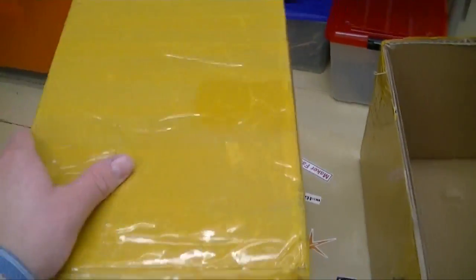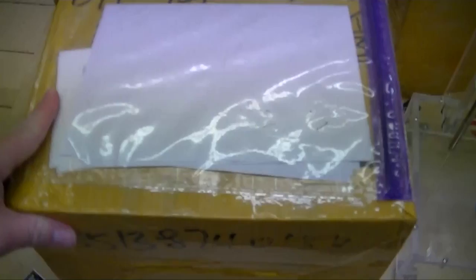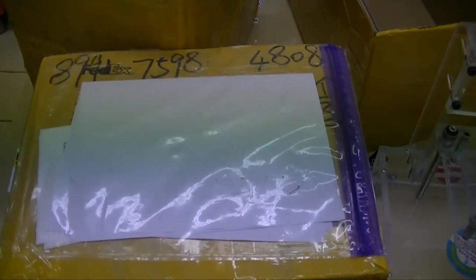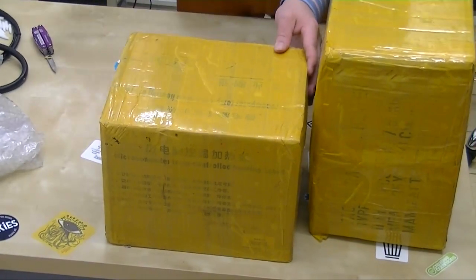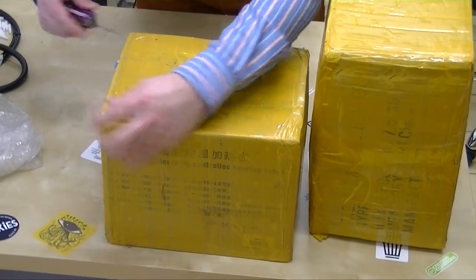I'm guessing this is the reflow oven and this is the hot plate. So let's get into the hot plate. Okay, I'm guessing this one here is the hot plate. Also all wrapped up in tape.